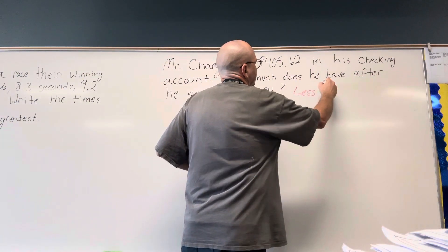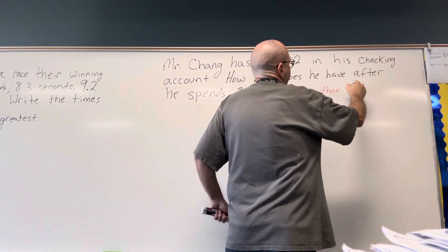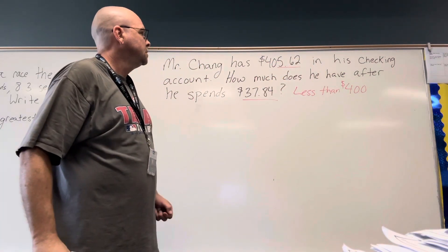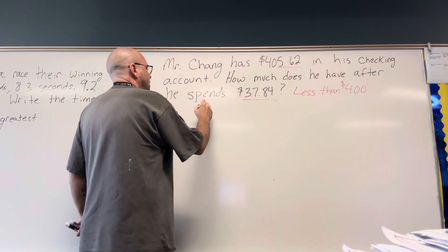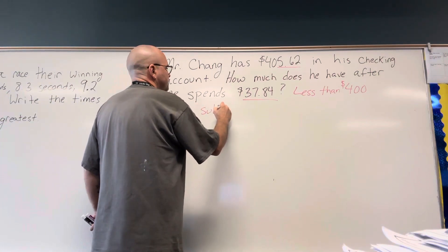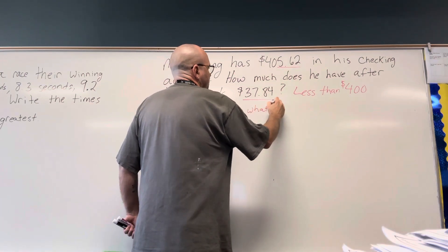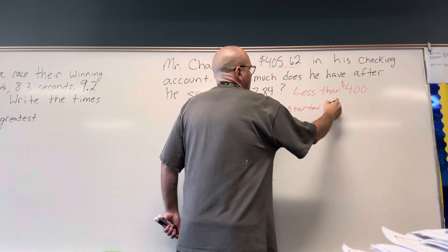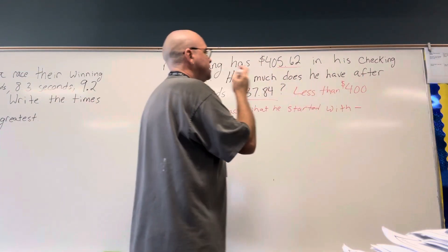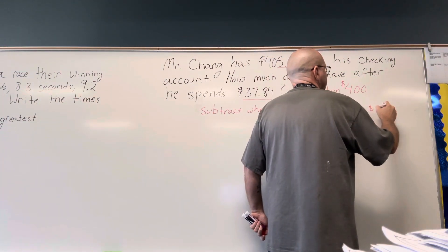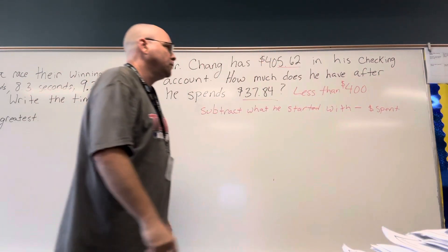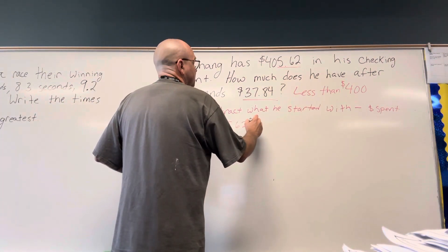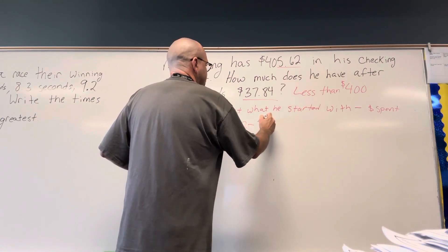So he's going to have less than $400 because I'm subtracting obviously more than $5.62. I need to subtract what he started with, subtract what he spent — what he started with minus what he spent. Our equation: we have $405.62 subtract $37.84.